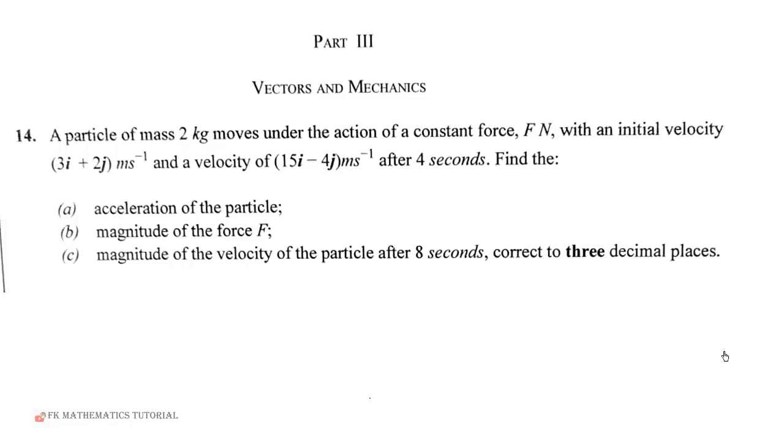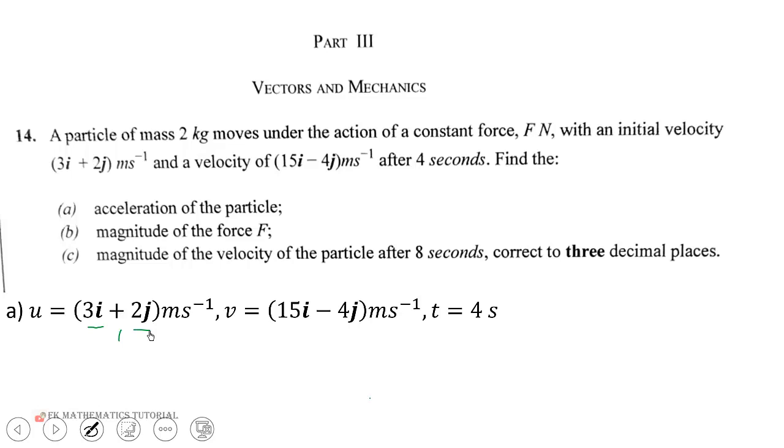Find: (a) acceleration of the particle, (b) magnitude of the force F, (c) magnitude of the velocity after 8 seconds correct to 3 decimal places. Let's pick the information from the question. We have initial velocity u = (3i + 2j) m/s, and final velocity v = (15i - 4j) m/s.